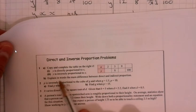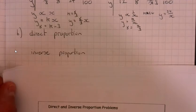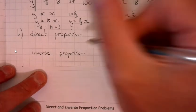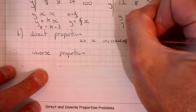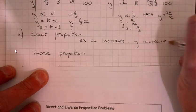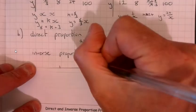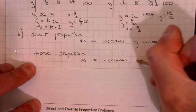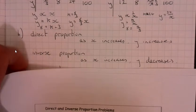Part B on here. It said explain in words the main difference between direct and inverse proportion. So, direct proportion, as x increases, y increases. It's probably the easiest way we can put it. Inverse proportion, as x increases, y decreases. There you go.